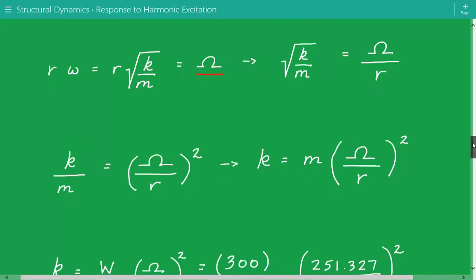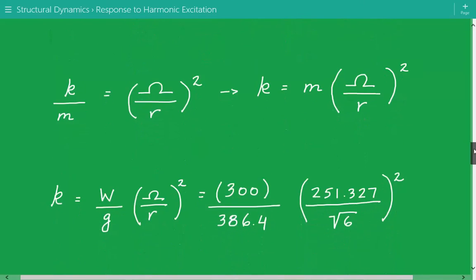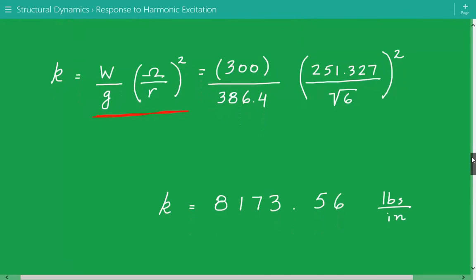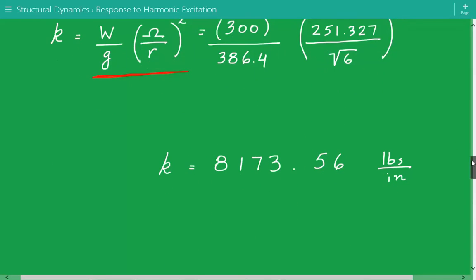Now we simplify even further. The mass m is equal to w over g—weight divided by gravitational acceleration. Here's our expression for k: w over g times the excitation frequency divided by the frequency ratio squared. We plug in the numbers and we get the required stiffness is equal to 8173.56 pounds per inch.